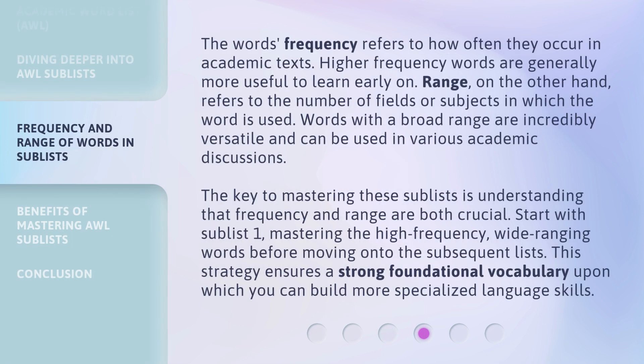A word's frequency refers to how often it occurs in academic texts. Higher frequency words are generally more useful to learn early on. Range, on the other hand, refers to the number of fields or subjects in which the word is used. Words with a broad range are incredibly versatile and can be used in various academic discussions.